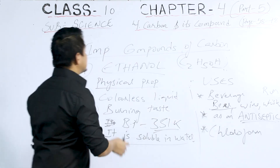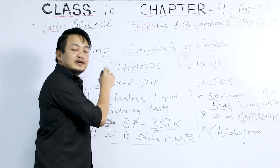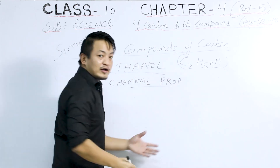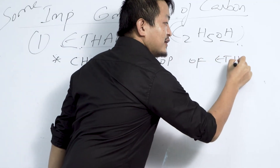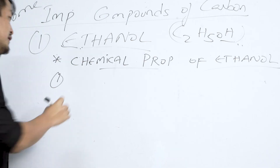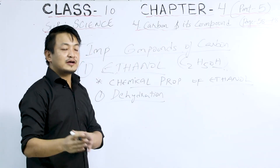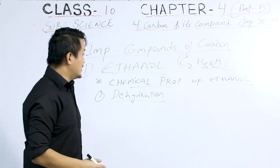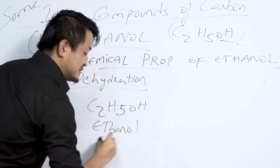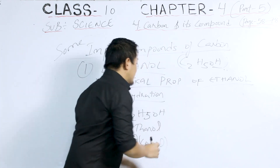Now let's study the chemical properties of ethanol. The first chemical property is dehydration. Dehydration means losing of water. We have ethanol here — ethanol is an alcohol — and we need to remove the water from it.